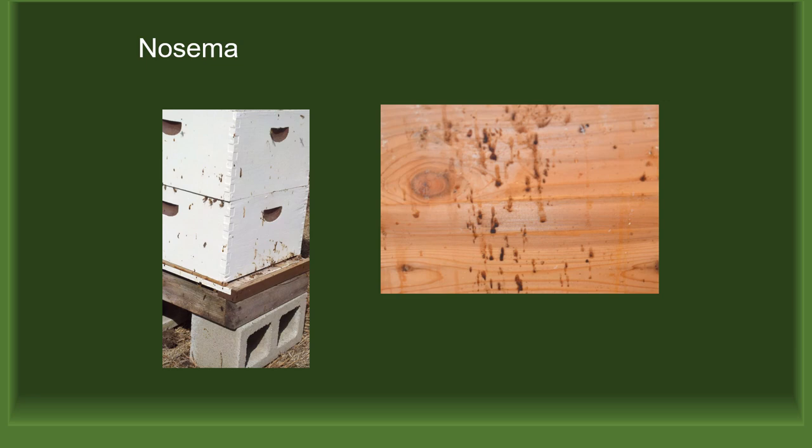The most common hive disease is nosema, which affects the gut of the honeybees. There are two types: Nosema ceranae, which can affect the hive at any time of year, and Nosema apis, which is most problematic in the winter and spring and can be identified by fecal droppings on the inside and outside of the box. There is a treatment for nosema called Fumagilin-B, which replaced fumagillin a few years ago. It works very well for Nosema apis but not as well for Nosema ceranae.